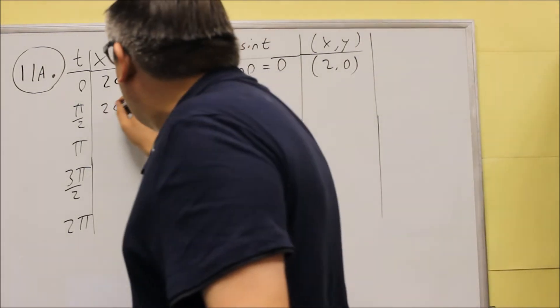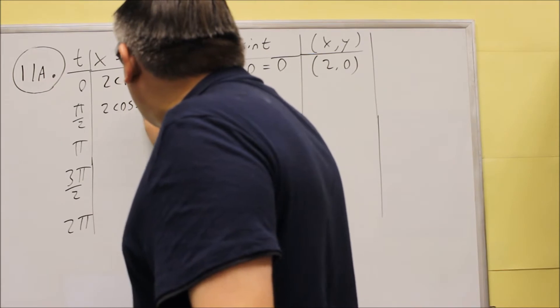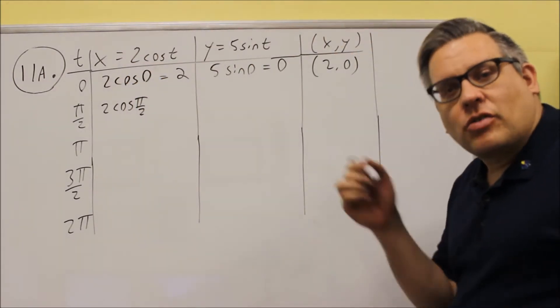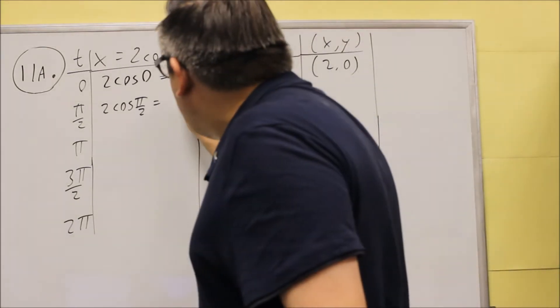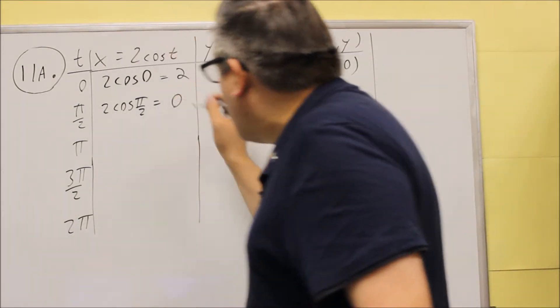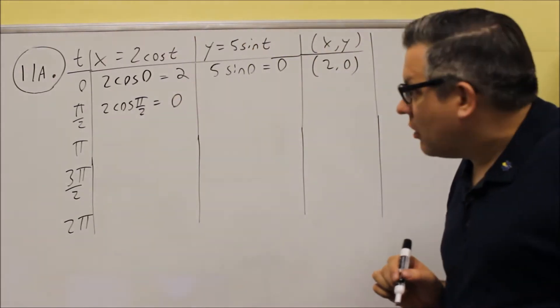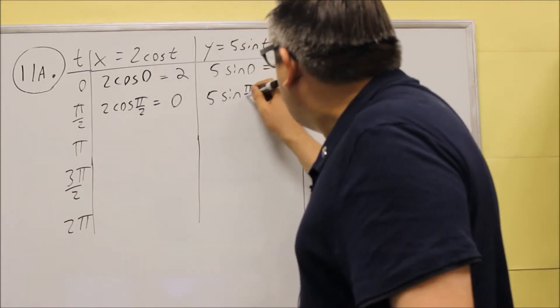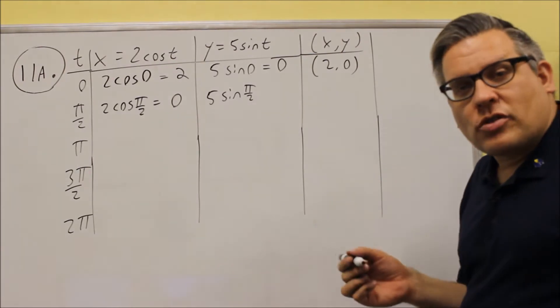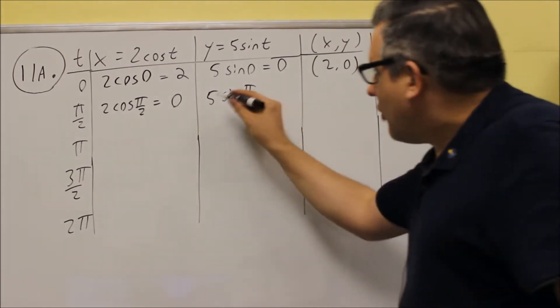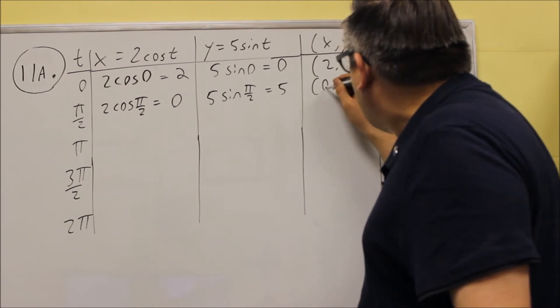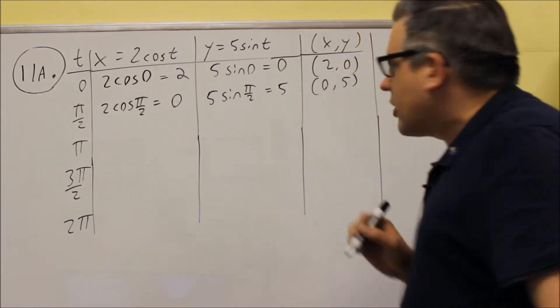Next, pi over two, two cosine pi over two. Pi over two is 90 degrees. The x value there is zero, which means that you would have two times zero, or zero you would get for that one. Next you have five sine pi over two. So sine of pi over two is one, so five times one is five, so zero, five is your next coordinate.